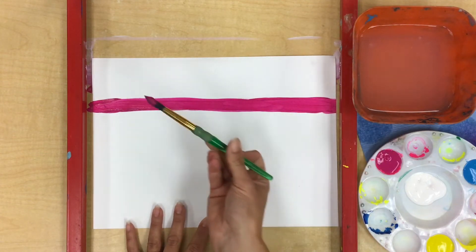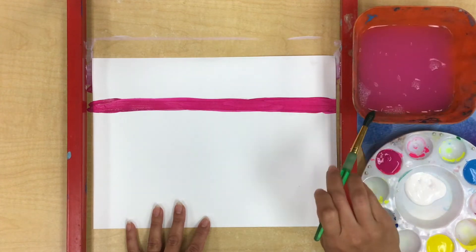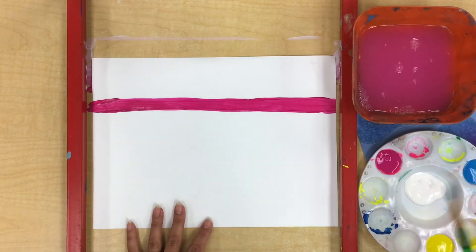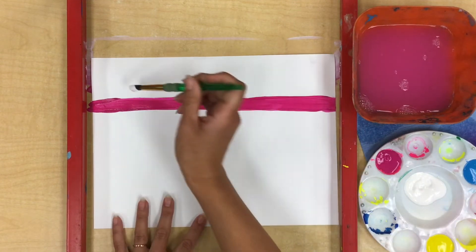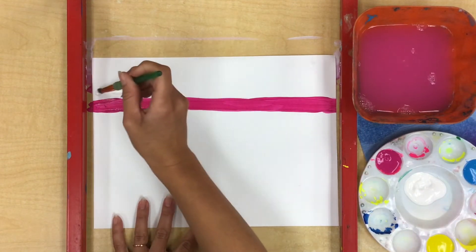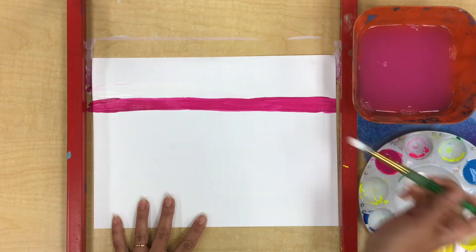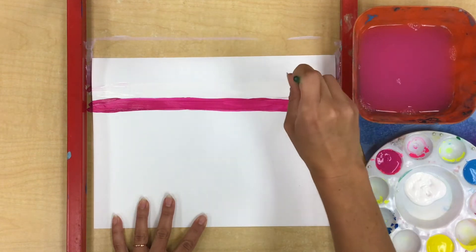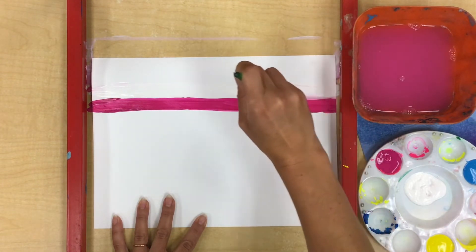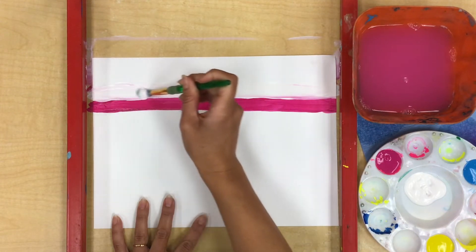Now once you have your first stripe we're going to clean our brush so we can get a new color. Wipe it on the edge and then dry it on your towel. Next I'm going to get some white, just plain white, and I'm going to create my second stripe right above my pink. I know you can't see it very well yet but this white is very important because when it mixes with our color it's going to create a lighter version, a tint of our color.